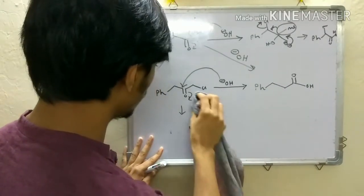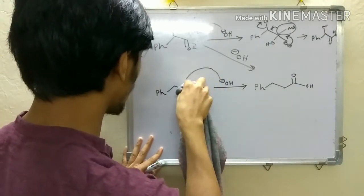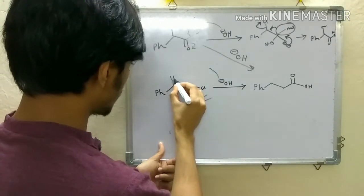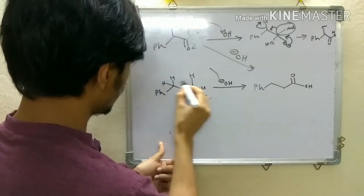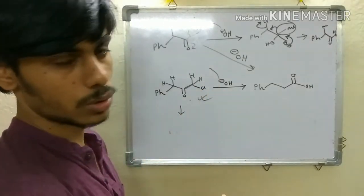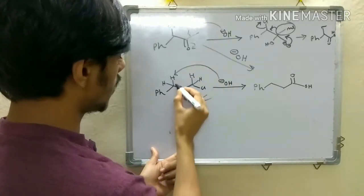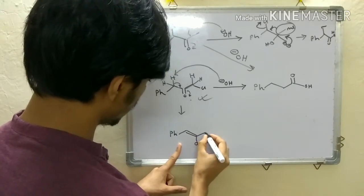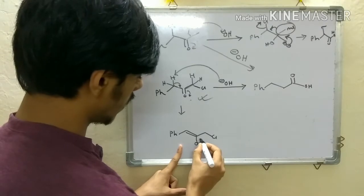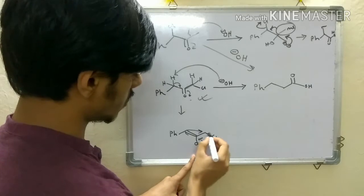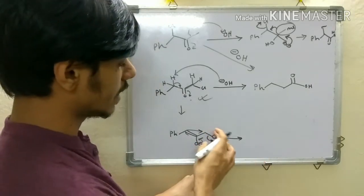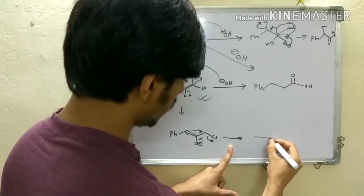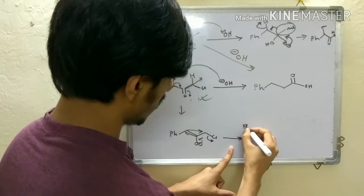If you look at the molecule carefully, you will realize what the other possibility is. These hydrogen atoms are acidic because they are adjacent to the electron-withdrawing carbonyl group. So the hydroxide ion can abstract this hydrogen to give an enolate. This enolate can then attack the C–Cl sigma-star bond, which is an internal electrophile, and from this internal attack you get a particular intermediate.